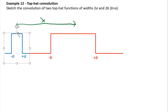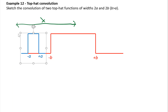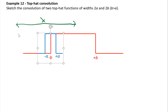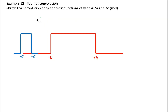As x changes, for each value of x we work out the overlap again. Because of the form of the two functions, the overlap is simply the common area — the region where both functions are non-zero, shaded in green. When x is very negative or very positive there is no overlap between the functions, so the convolution at those points is zero.